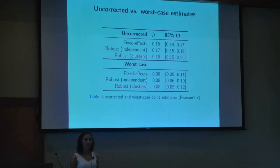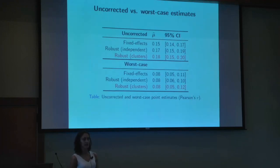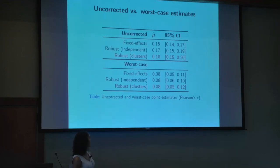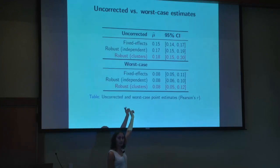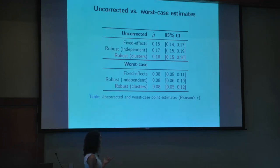That impression is corroborated by the numerical analyses. The naive estimate gives a pooled correlation of 0.18 with confidence interval bounded above 0.15. The worst-case estimate is about half as large — a correlation of 0.08 — but interestingly its confidence interval is also bounded above zero. So even under worst-case publication bias we get a correlation of 0.08.